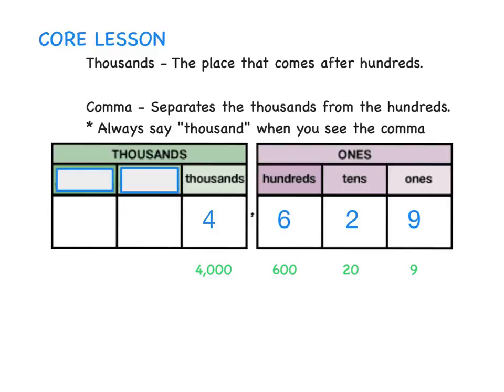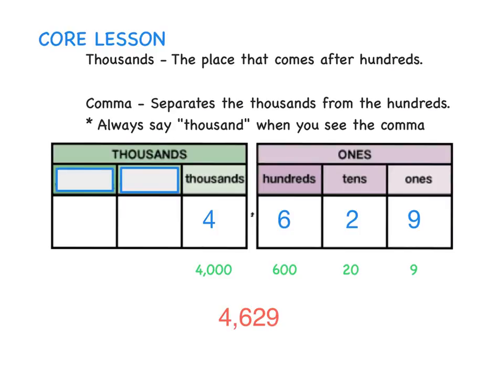The digit 6 is in the hundreds place. Its value is 600. The digit 2 is in the tens place. Its value is 20. The digit 9 is in the ones place. Its value is 9. Together, these 4 digits form the number 4,629.